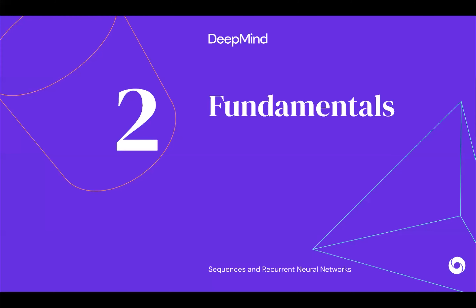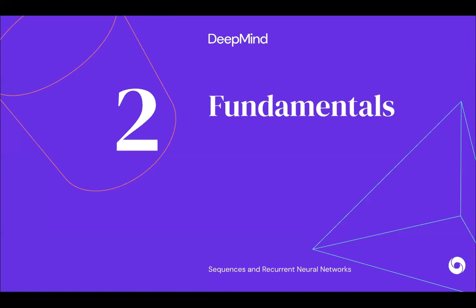In supervised learning we usually have pairs of data — input x and target y — and we use the signal from the targets to compute a loss and optimize the parameters. We have a model y ≈ f_θ(x) where θ are the parameters we're trying to learn. The loss is defined as a function between what we're predicting and what the targets are, summed over all examples, and we minimize this loss to optimize θ.